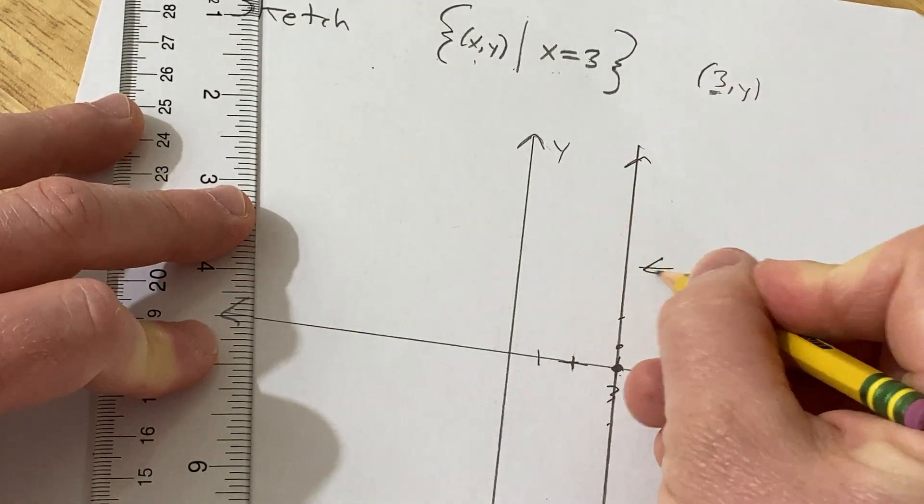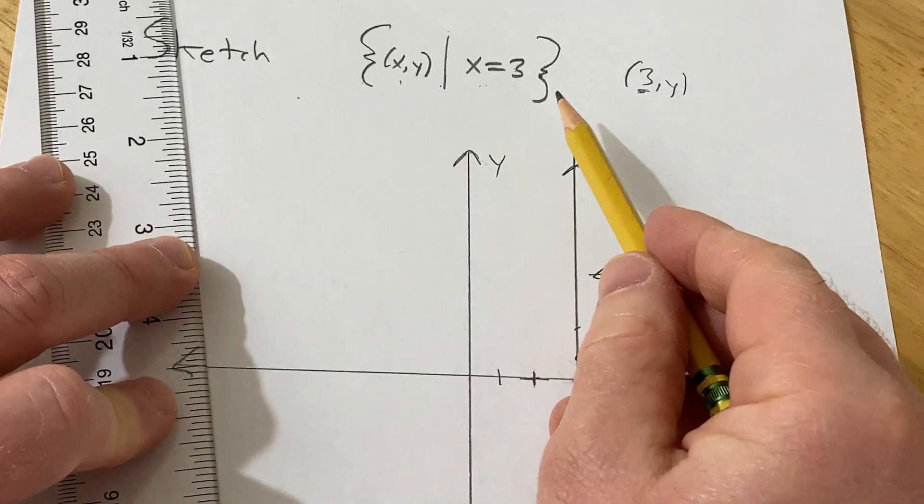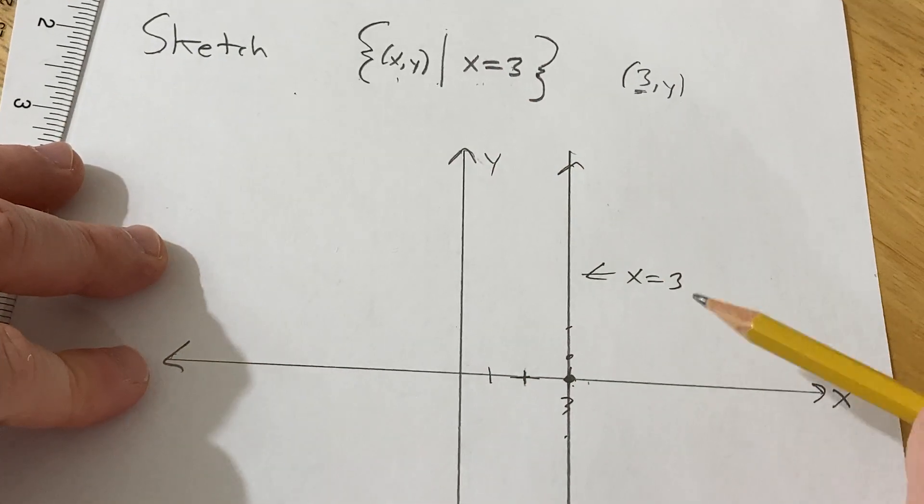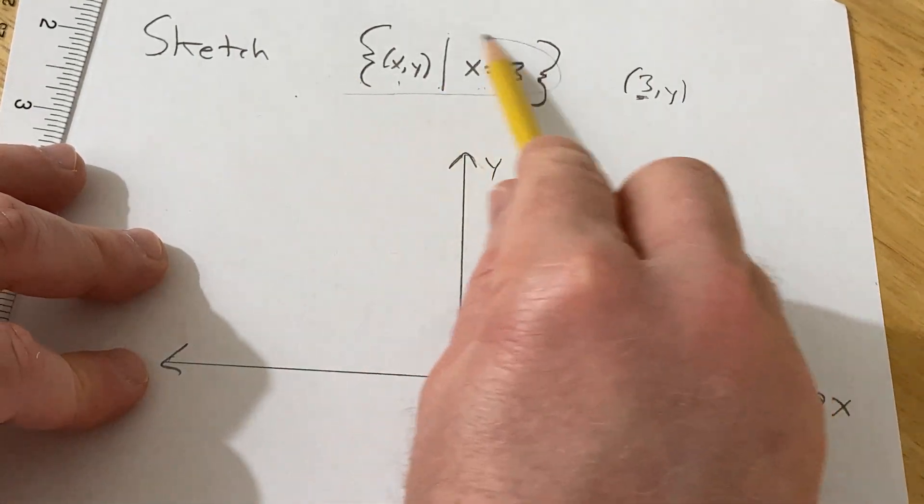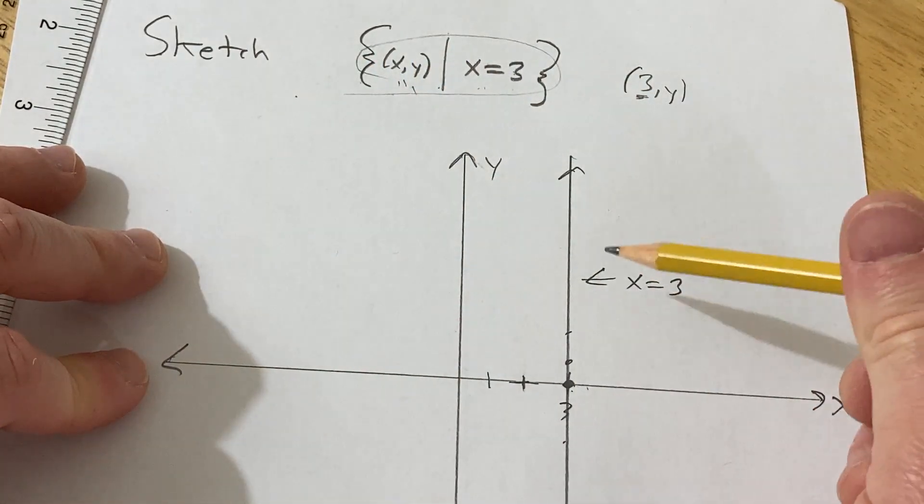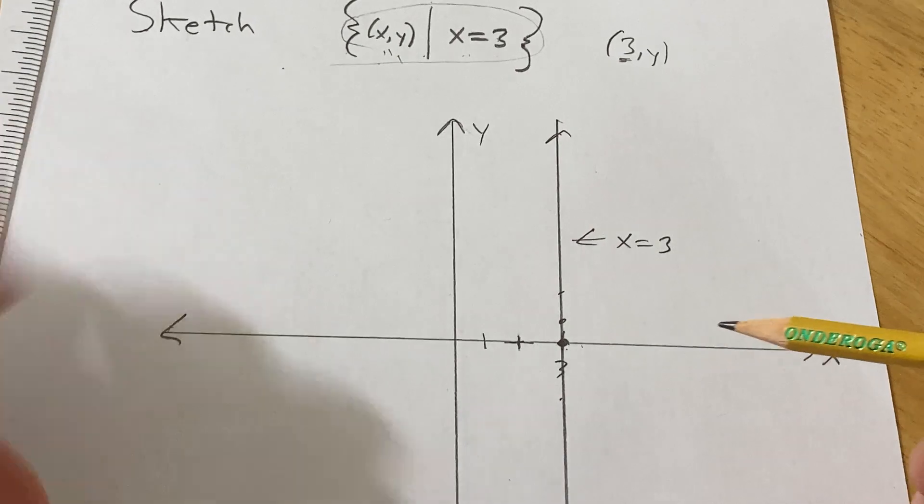This would be the line x equals 3. This set is basically the line x equals 3. All of the ordered pairs in this set are points on this vertical line. Pretty cool. Good luck.